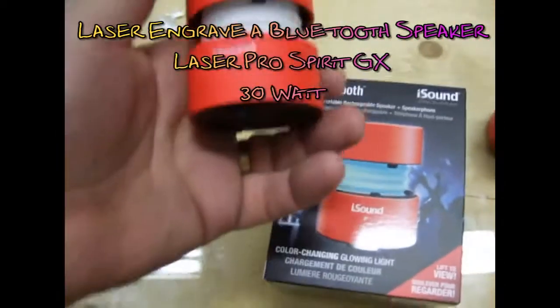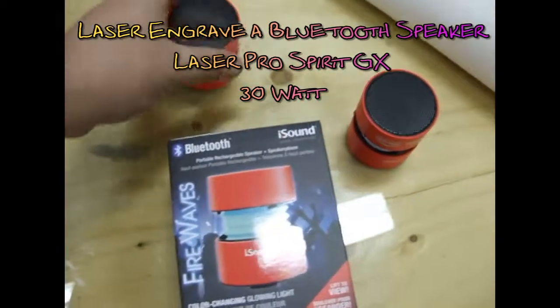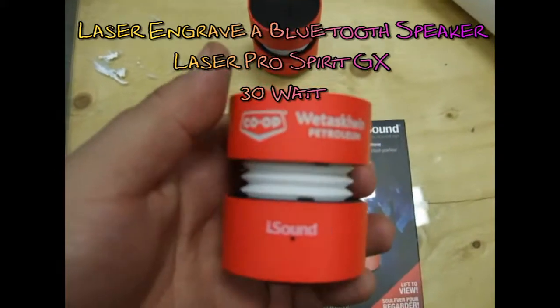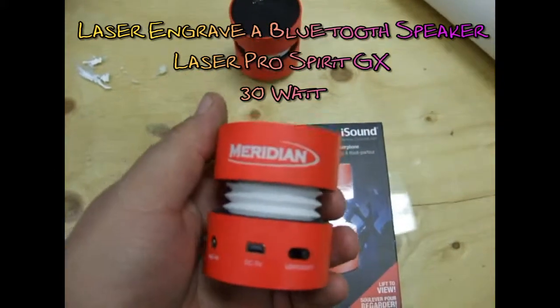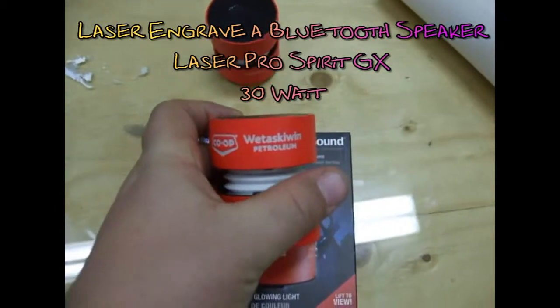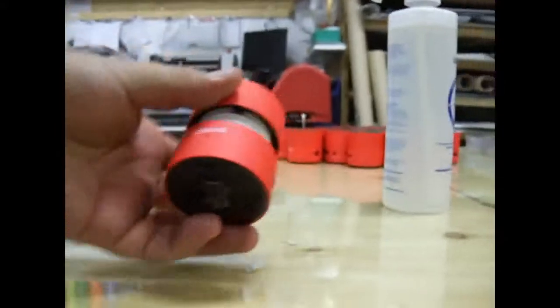Alright, today's project we are going to laser engrave the iSound Bluetooth speaker with two logos. We're going to be putting the Co-op Otasco logo on the front and the Meridian logo on the back. First thing we're going to do is squish the speaker back down to its storage position so that it fits in the laser engraver.